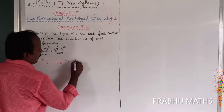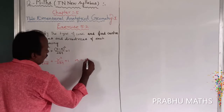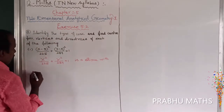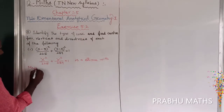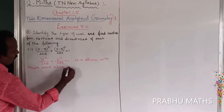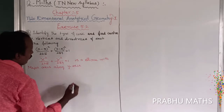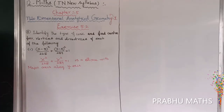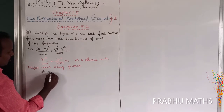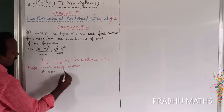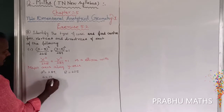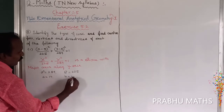This is an ellipse with major axis along the y-axis. Now a² = 289, b² = 225, so a = 17 and b = 15.